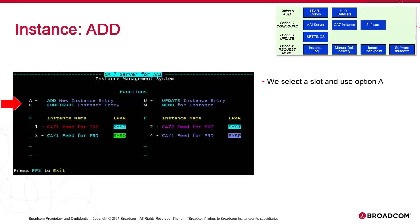We see the four options A, C, U, and M, which match the four options we outlined in the overview. We use option A for Add and select any of the available slots. It should be clear that when starting the IMS for the first time, no instance is defined. The IMS will automatically start the Add Instance function to define the first instance. The A Add option is therefore only used when defining more instances within the same IMS.